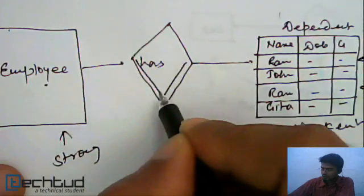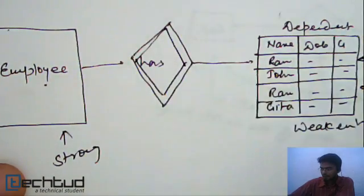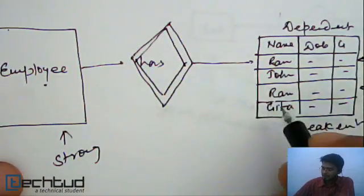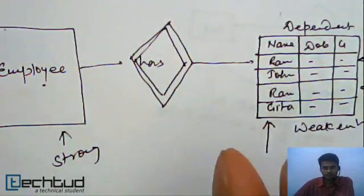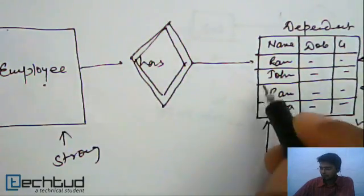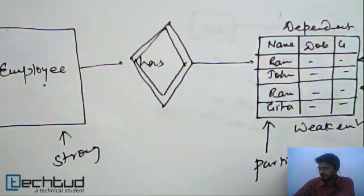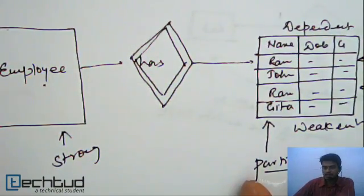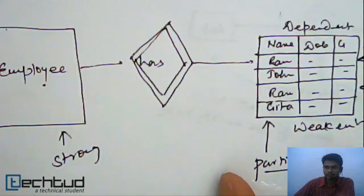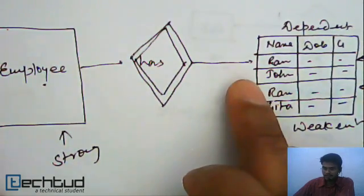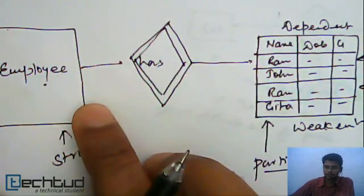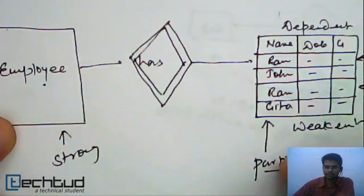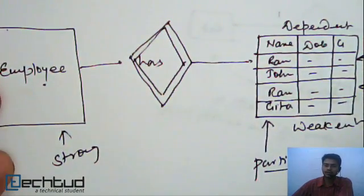This relationship is called an identifying relationship. We are assuming that no two dependents of an employee will have the same name, so we treat name as a partial key. A partial key is a key which can uniquely identify the dependents of the same employee E1 — it can be used to distinguish each dependent of a given employee.